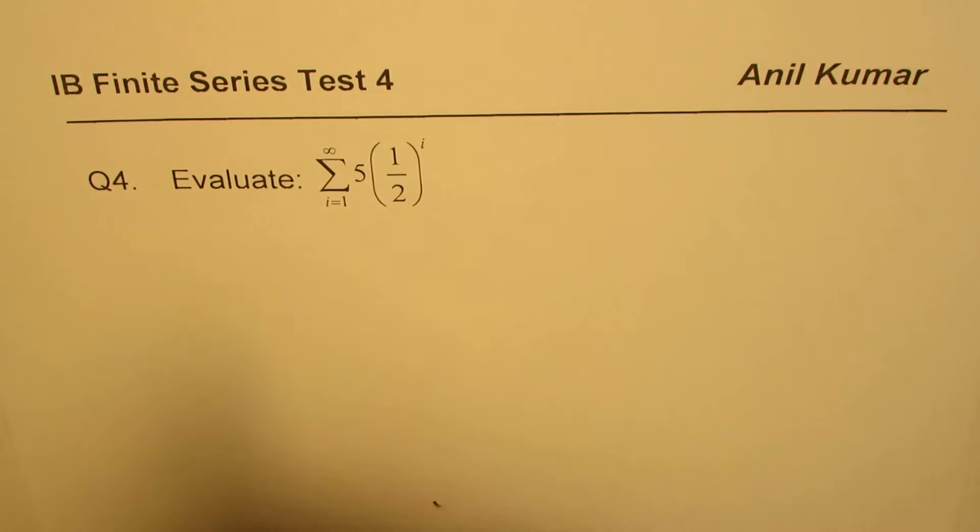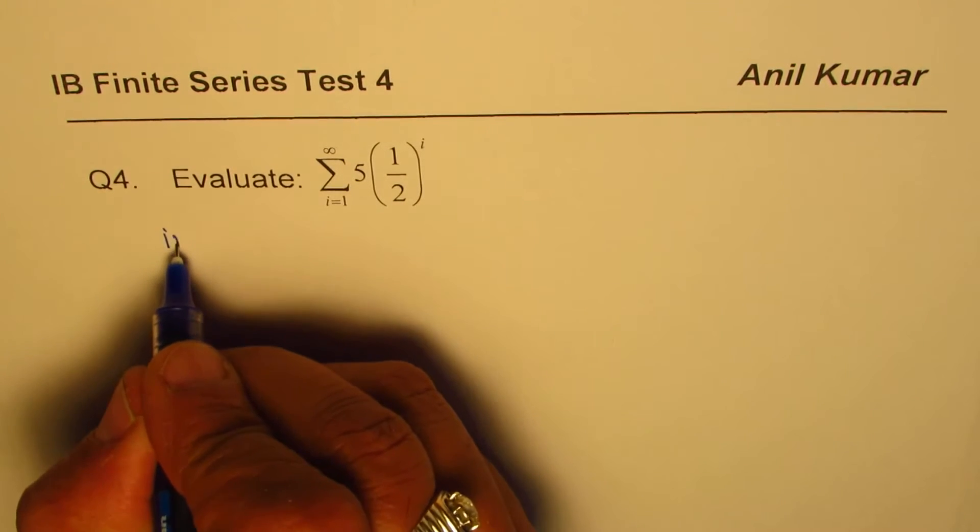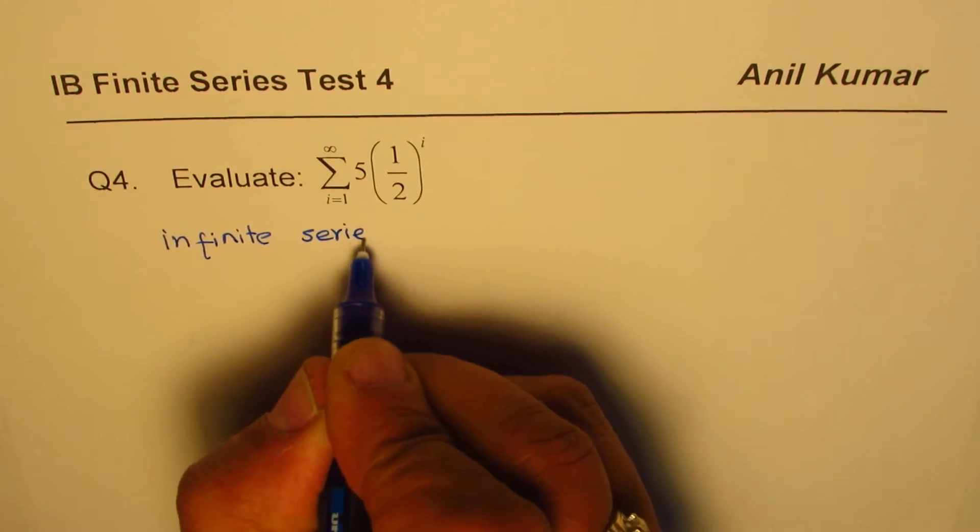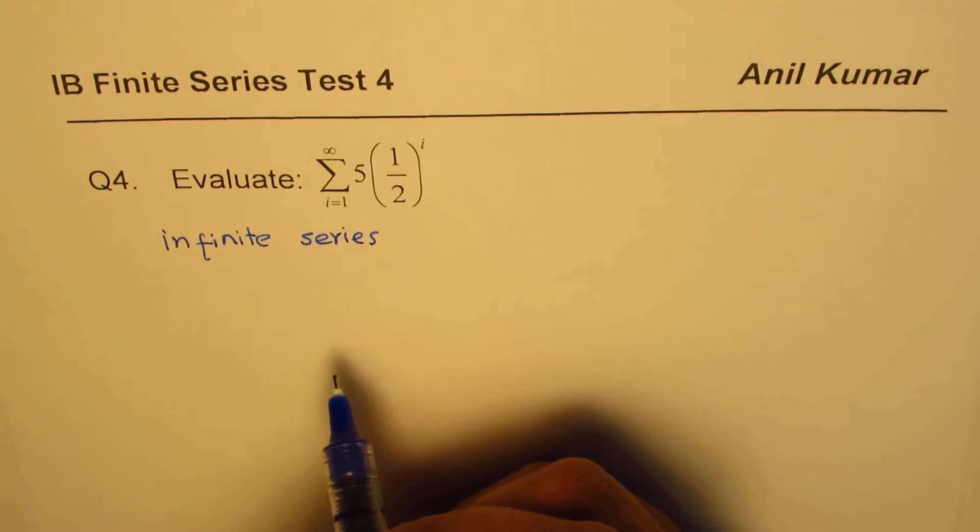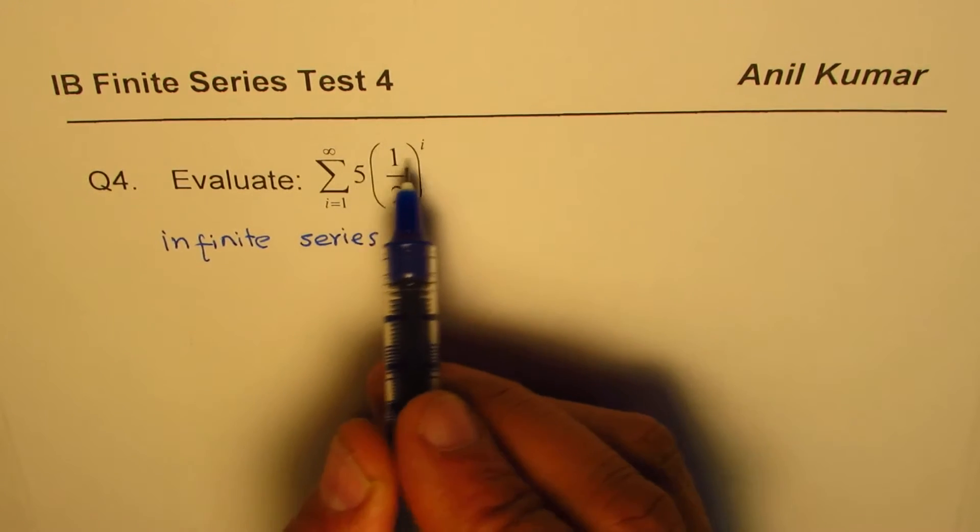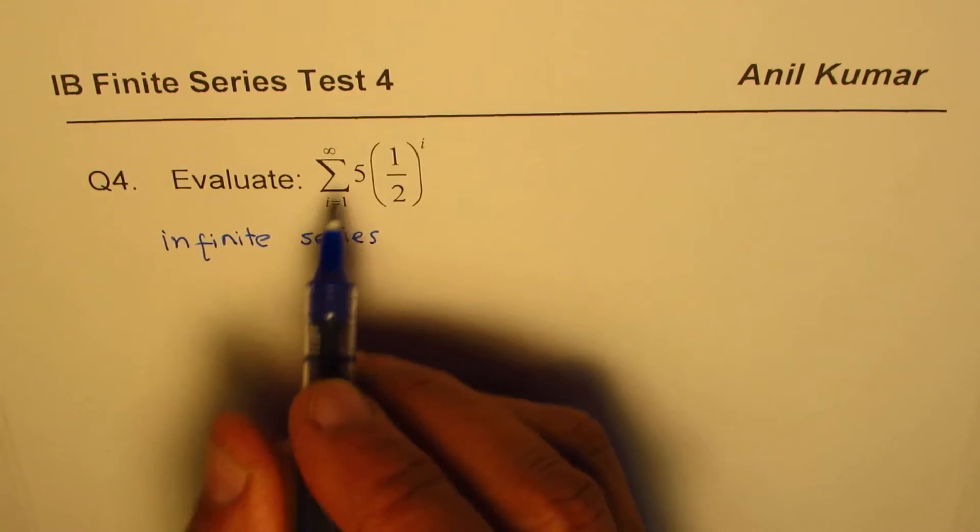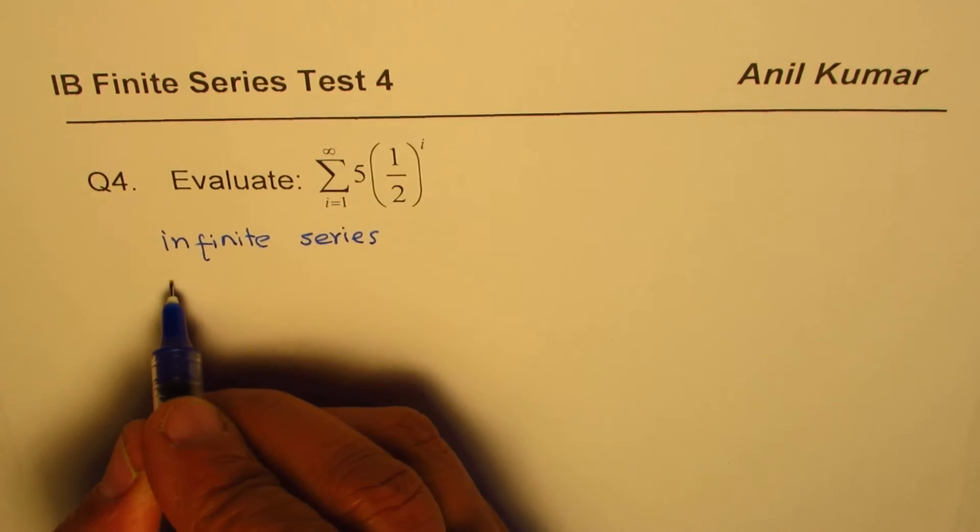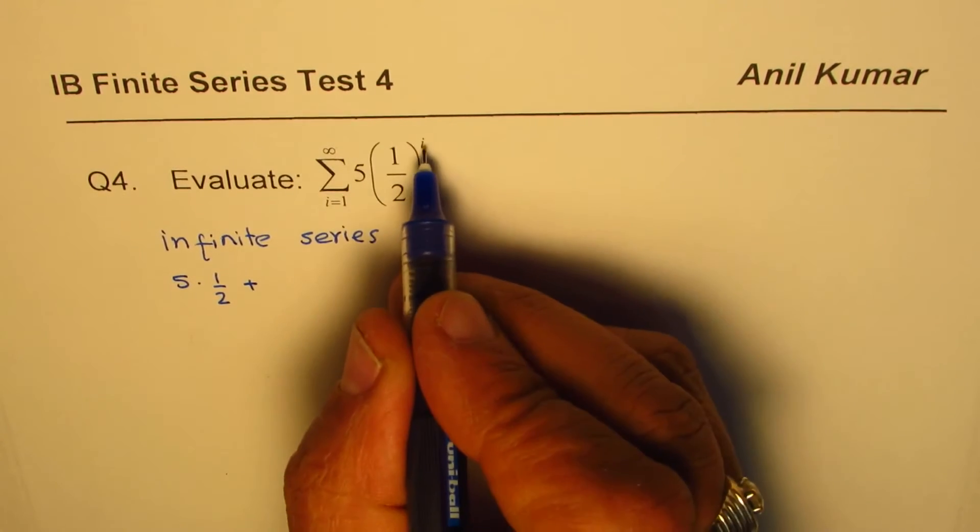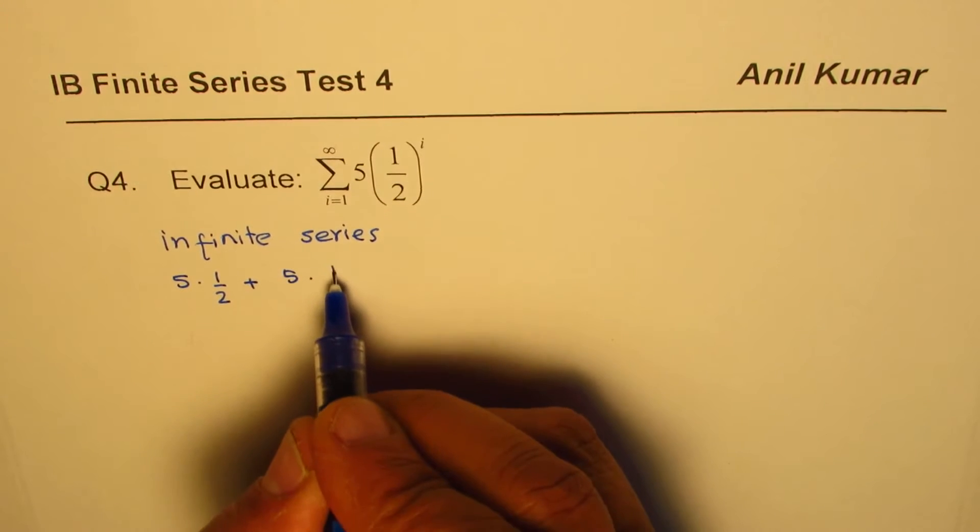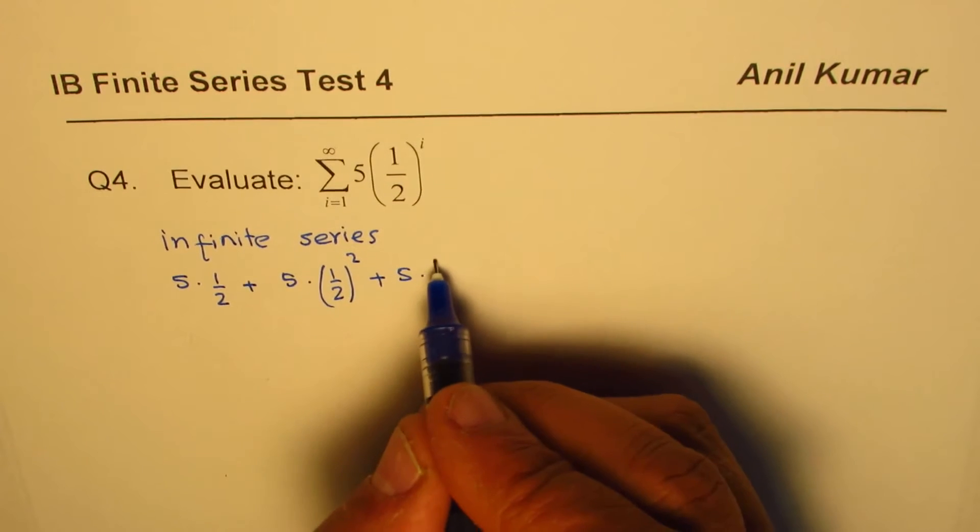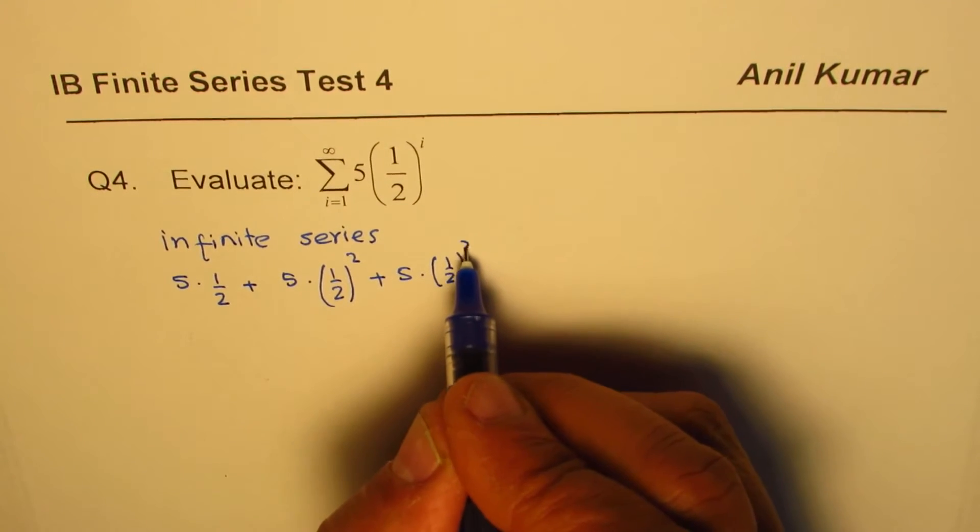Now let us try to analyze what we are given. First, we are given an infinite series. What kind of series is it? Sometimes if you are not very clear about it, you can always write down a few terms of the series. So let's use i equals one, then we get five times one-half, plus when i is two, five times one-half squared, plus five times one-half to the power of three, and like this the series moves on.